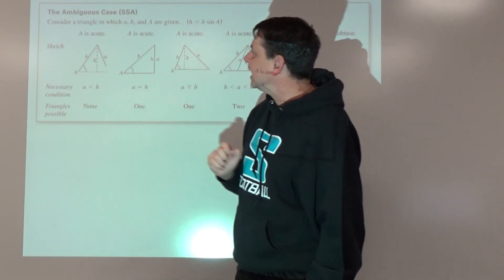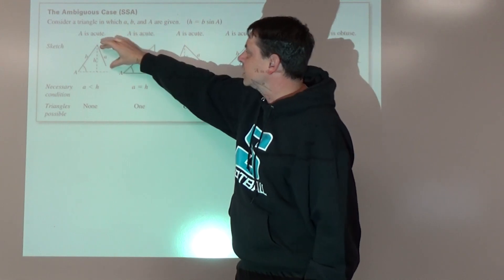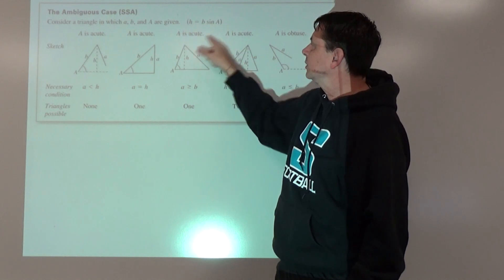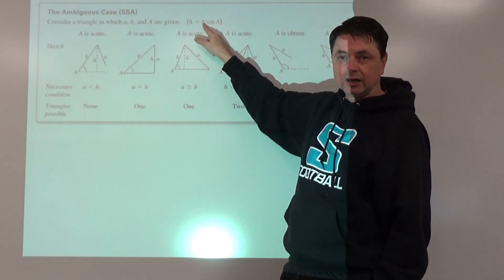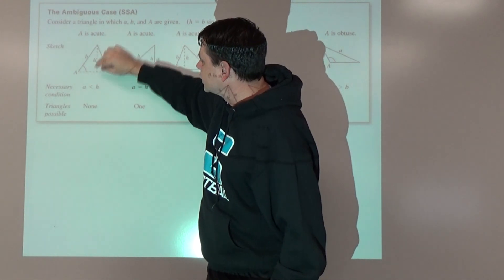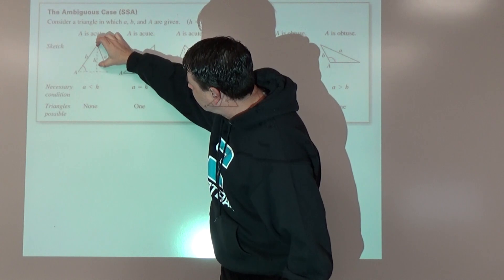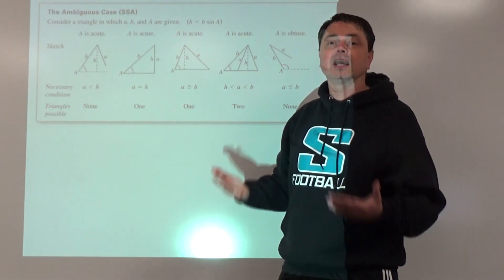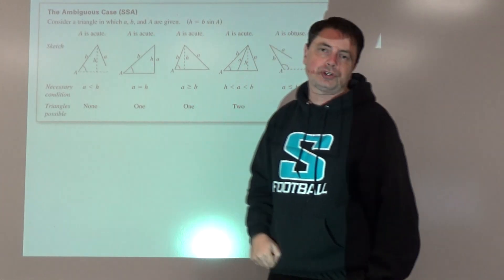Our first situation: what if the opposite side is shorter than the height? The height is calculated as B times sine of A — the non-matching side times the sine of the given angle. If the opposite side A is shorter than the height, there's no triangle — it can swing but is never long enough to touch the base and make a closed polygon. That's the no-triangle or no-solution case.